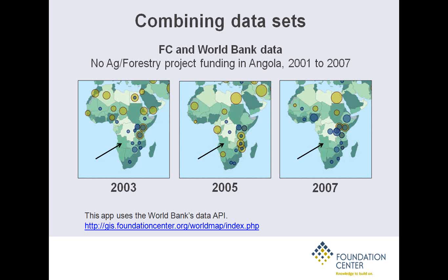One purpose of data visualization is to make an argument or help make a decision. This map shows World Bank projects and foundation projects by amount of money in 2003, 2005, and 2007. The World Bank spends much more than foundations typically. One obvious gap: Angola received no money for fishing, agriculture, and forestry from the World Bank in those years, nor did any foundations spend money there. This doesn't mean it's being neglected, but it's a good starting point for asking why funding isn't going there if there's a need.